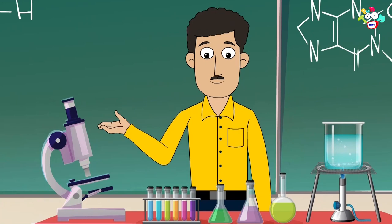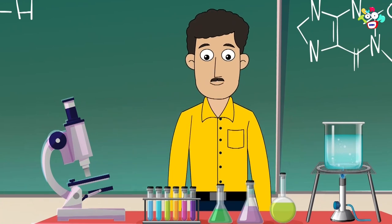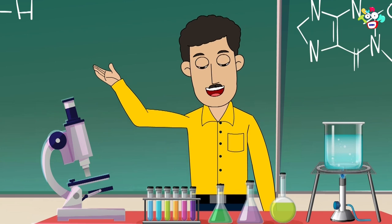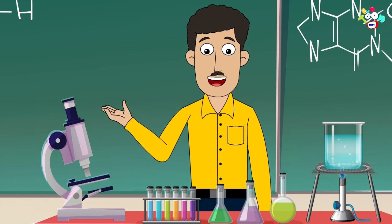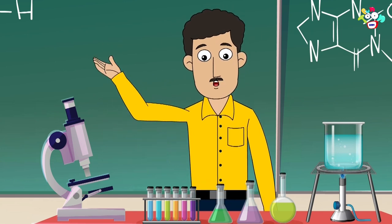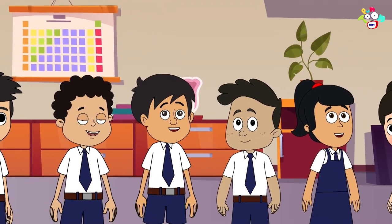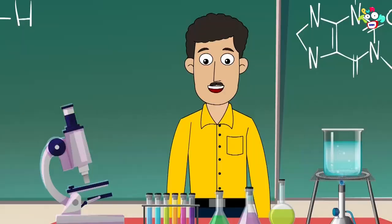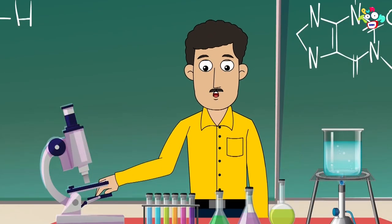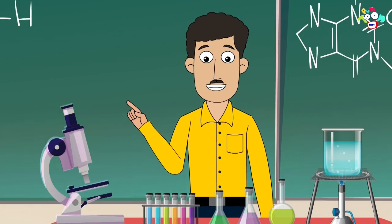This is a microscope. It is called Sukshmandarsheen Hindi. Our eyes can see things to a certain capacity. Things that are not visible to the eyes can be seen through it. It was invented by Anthony Leeuwenhoek. It is used in zoology and botany to see up to a cell.